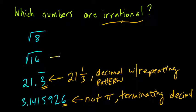Here we have the square root of 16, which is 4, and that's a number. The number 4 is a whole number, and whole numbers are rational, so this is not irrational.